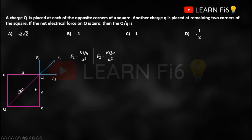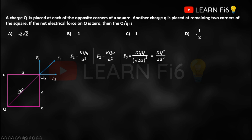For F3, we consider the two Q charges at diagonally opposite corners. The distance between them is √2·a. So F3 = k·Q·Q / (√2·a)² = kQ² / (2a²). Squaring the denominator cancels the root, leaving kQ²/2a².